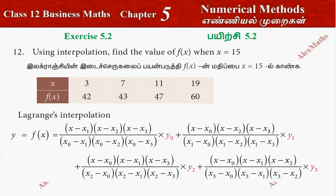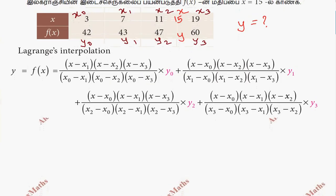First in the formula, we have x naught, x1, x2, x3 and then y naught, y1, y2, y3. We need to find the value at x equals 15. The given values are x naught equals 3, x1 equals 7, x2 equals 11, x3 equals 19, with corresponding y naught equals 42, y1 equals 43, y2 equals 47, y3 equals 60. Now we substitute these values into the formula.